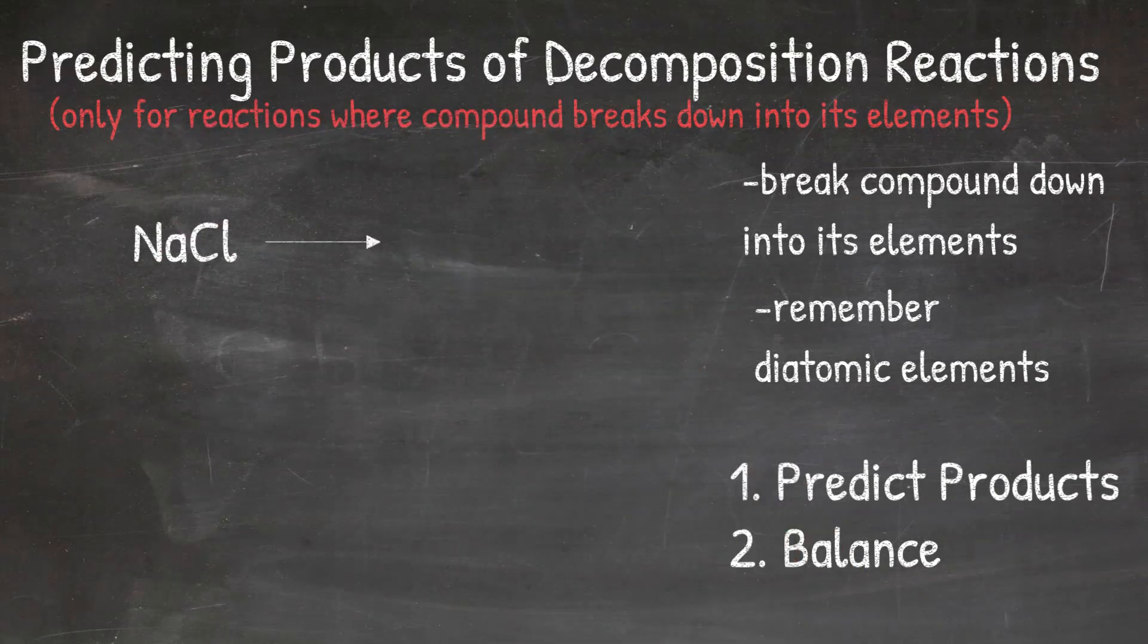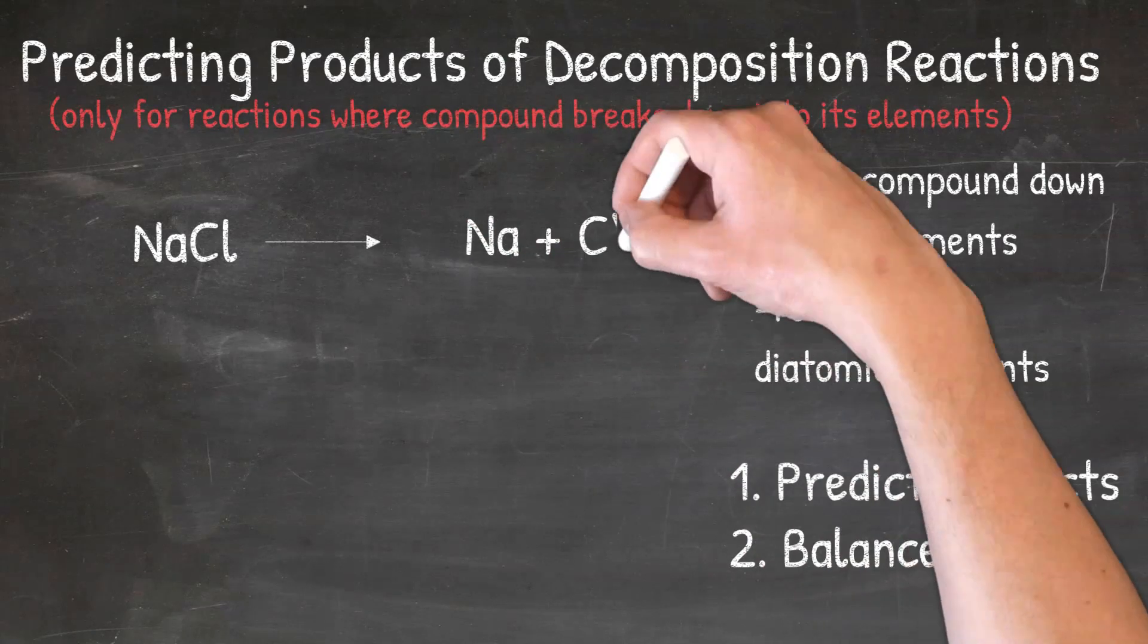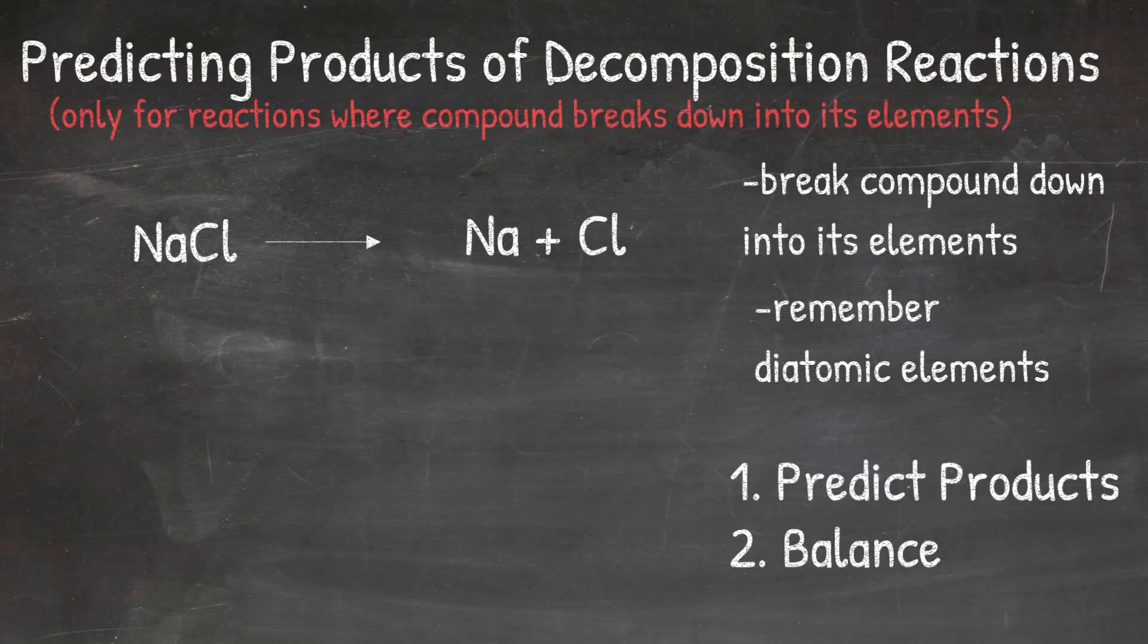So in our first example, we will look at the reaction when NaCl decomposes into its elements. I first need to look at what two elements make up NaCl, and that would be Na and Cl. So I'm going to write Na plus Cl as my products, but I need to add a 2 to Cl because it is a diatomic element. So the products for this reaction are Na plus Cl2.